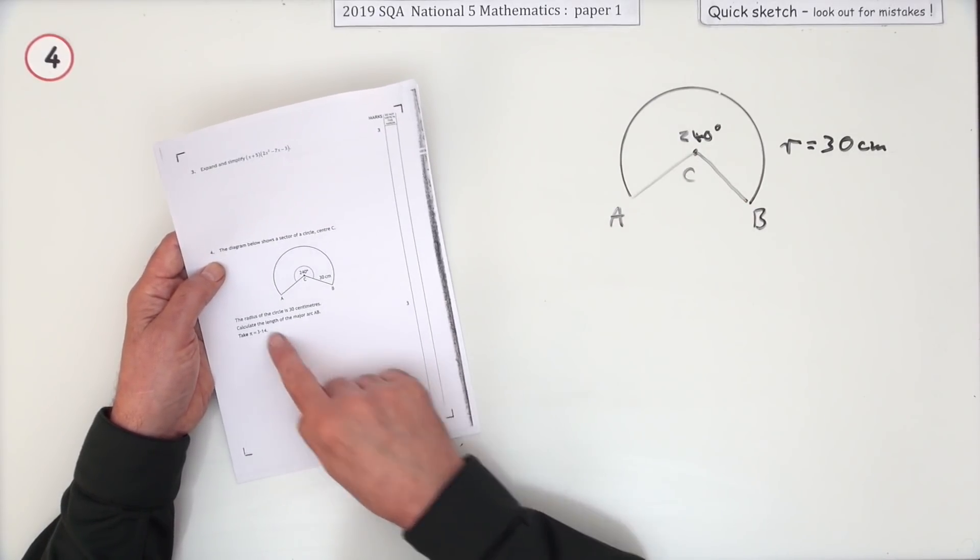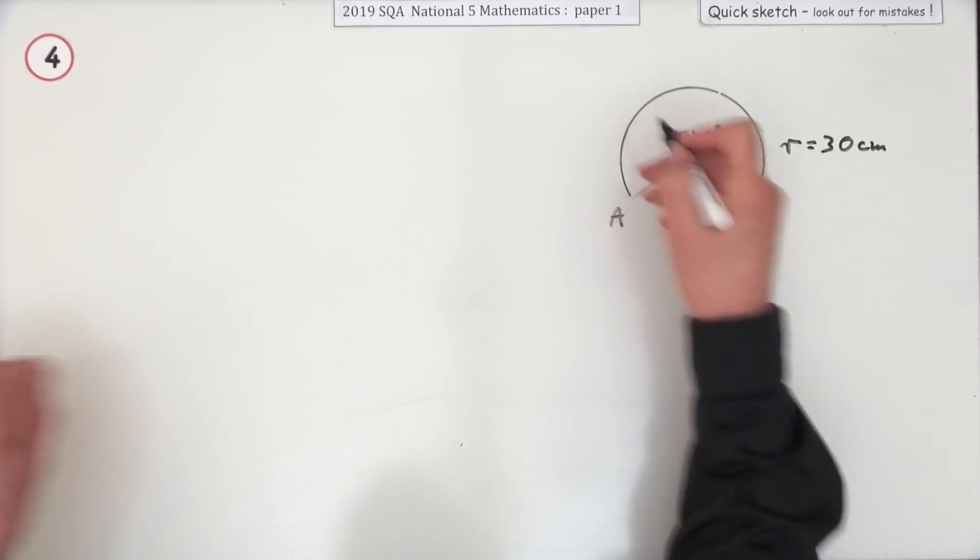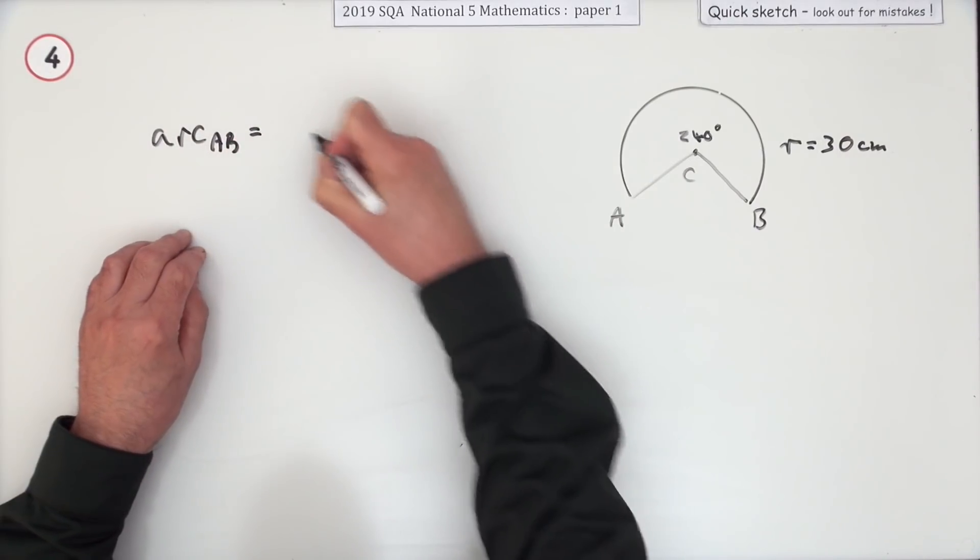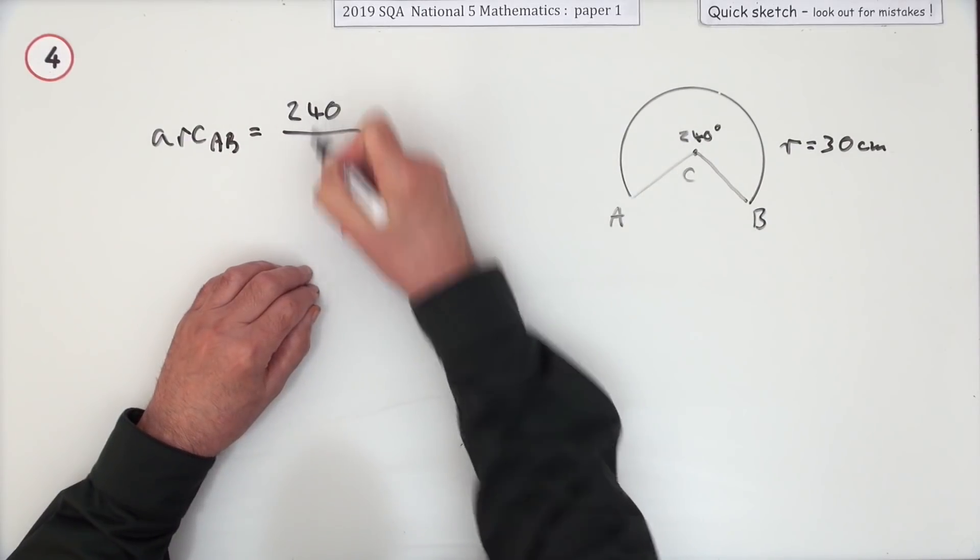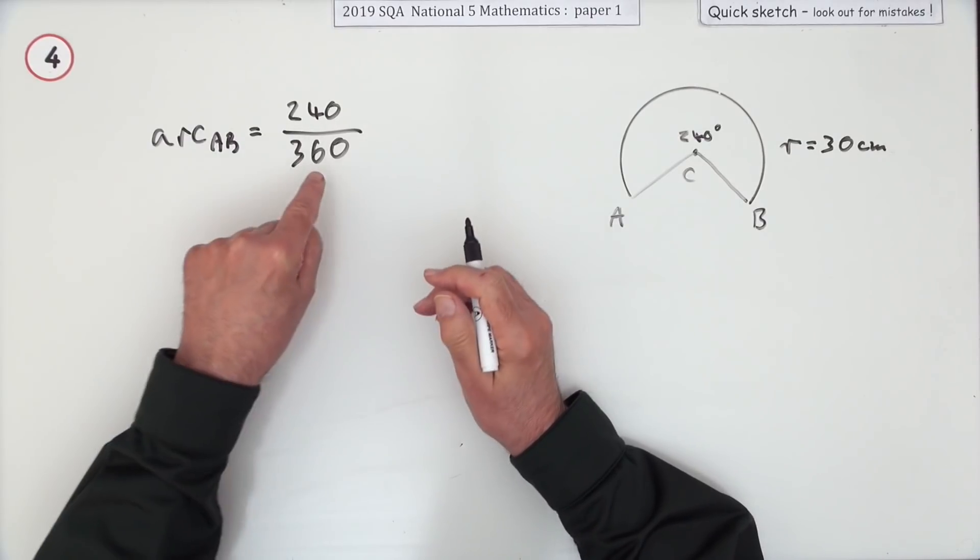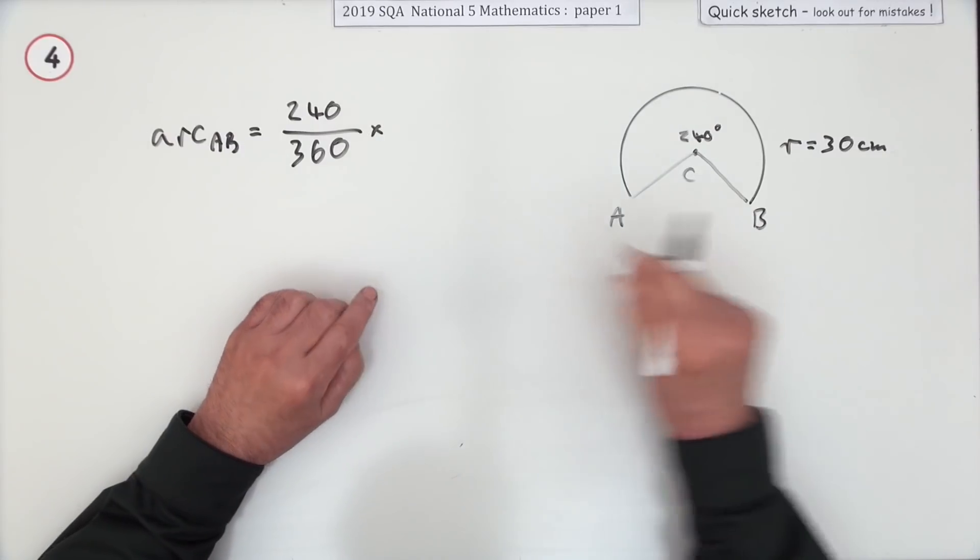Calculate the length of the major arc and it says you have to use 3.14 for pi. Well, the length of that arc, just call it arc AB, it's a certain fraction of the circle. The angle gives the fraction. It takes up 240 out of the 360 degrees. It's that fraction of the circle, so that arc is that fraction of the circumference.